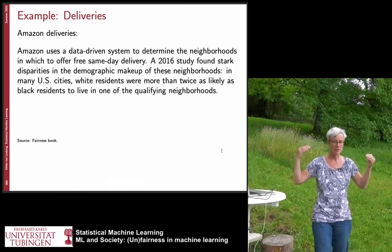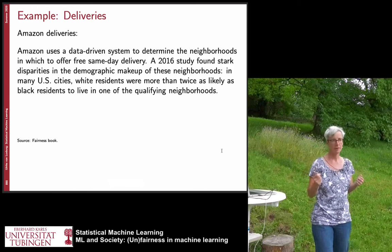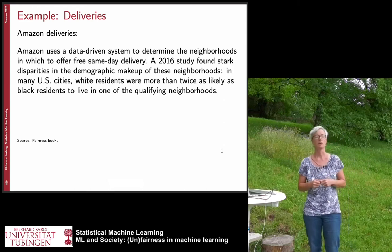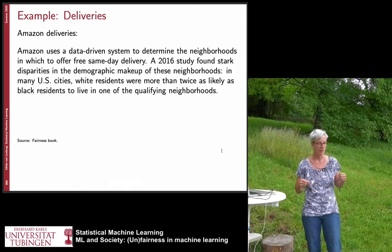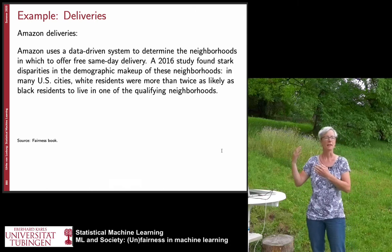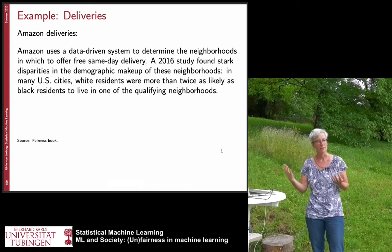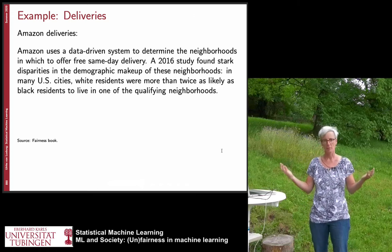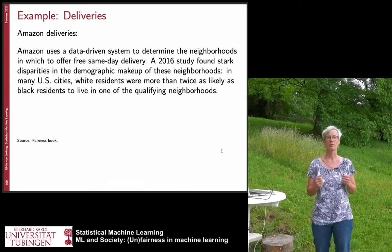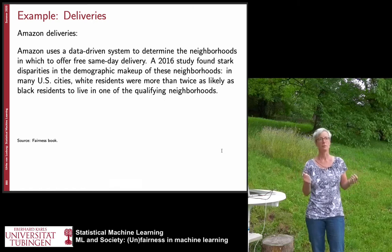In machine learning, there might be many implicit biases — as seen in the credit scoring example — or there might be explicit biases which are intended by the people who design the system, as in the Harvard case. In all cases, you need to think carefully about whether this is really what you want to do.